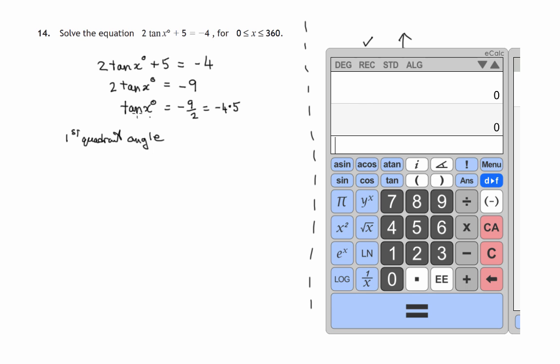So we use inverse tan. On this it's arc tan, a tan, but in yours it might be tan to the minus one. That's more normal. Second function tan or whatever. You'll know how to use your own calculator to find the angle whose tangent is 4.5, positive 4.5.